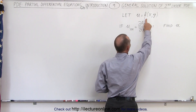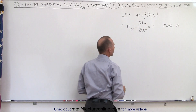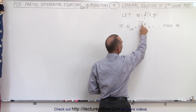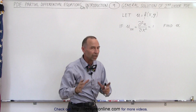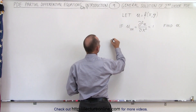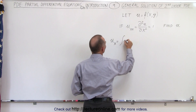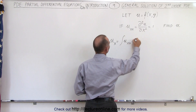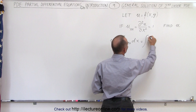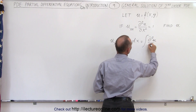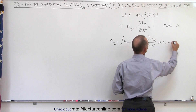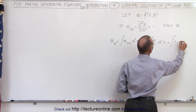u is defined as a function of the two independent variables x and y. When we take the partial derivative of u with respect to x, y is treated as a constant. So we're going to find u sub x, which is equal to the integral of u_xx times dx. Since u_xx equals 1, this becomes the integral of 1 times dx.